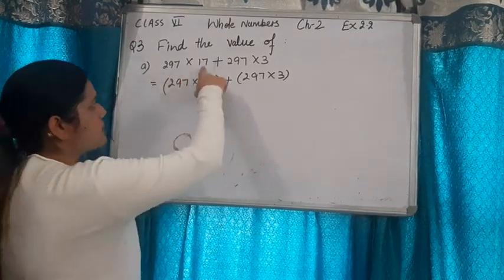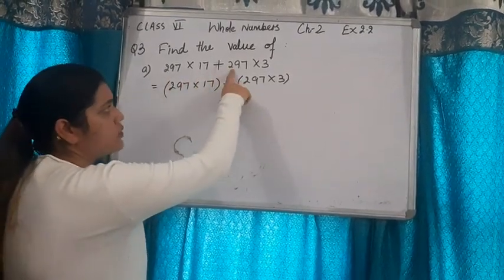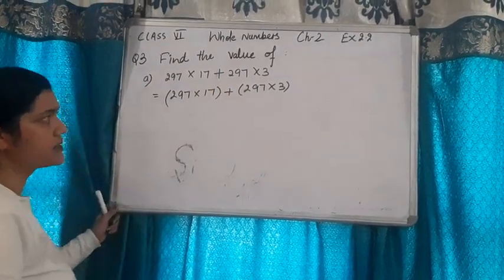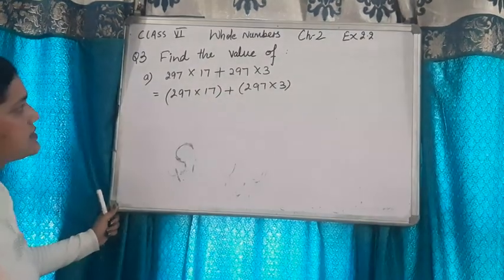If you multiply first 297 multiplied by 17 and 297 multiplied by 3 and then add, the process is lengthy. That is a lengthy process.